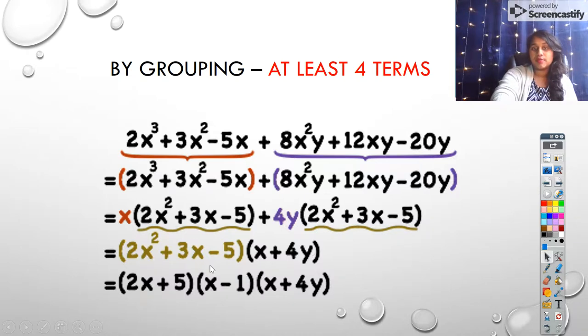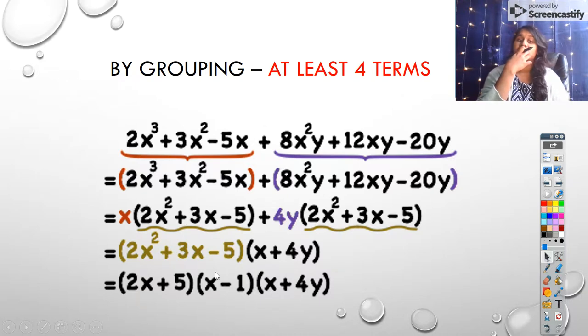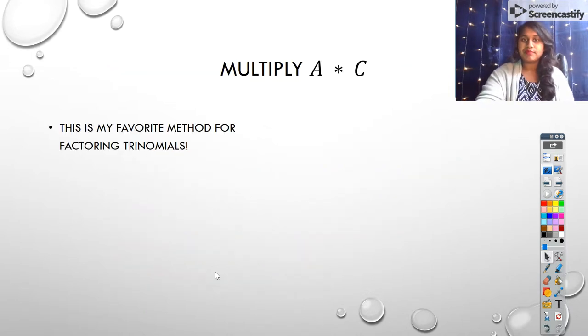We pulled down the common factor, the common binomial that was created, that 2x² + 3x - 5, and all we were left with over here was x and 4y. And we can factor 2x² + 3x - 5. That's a quadratic. You should know how to factor those by the end of today. Whether you use the A times C method, you use the box method, you use the guess and check method, you use synthetic division, whatever your method is, you should be able to do that by the end.